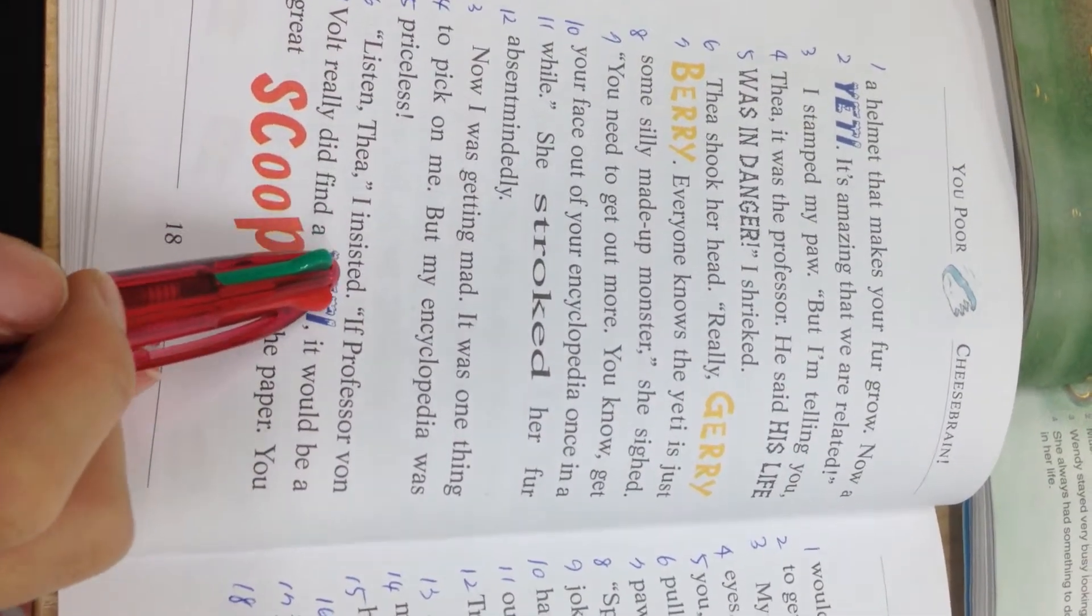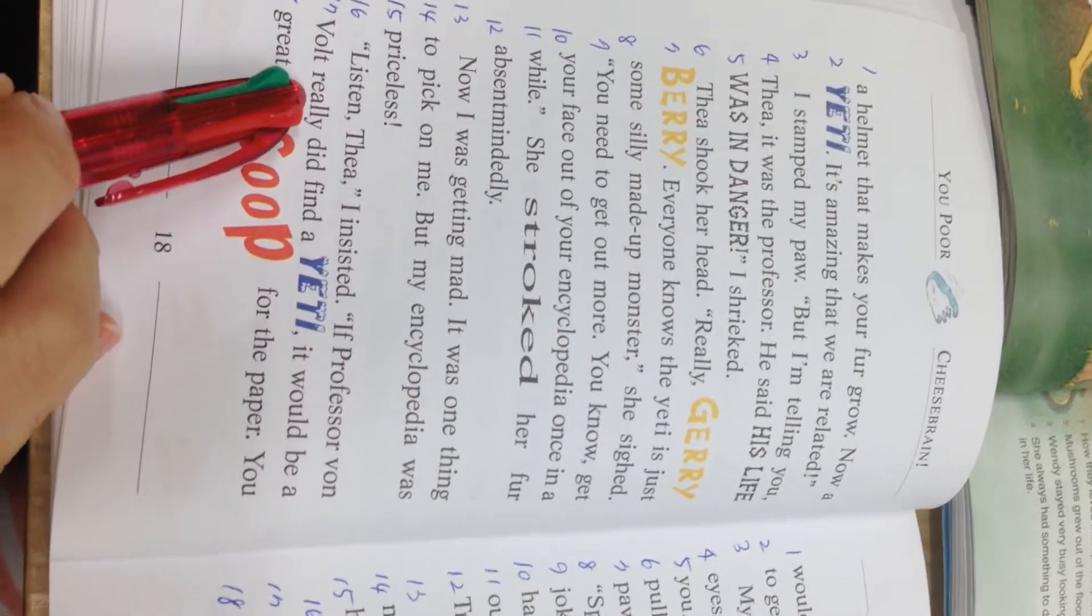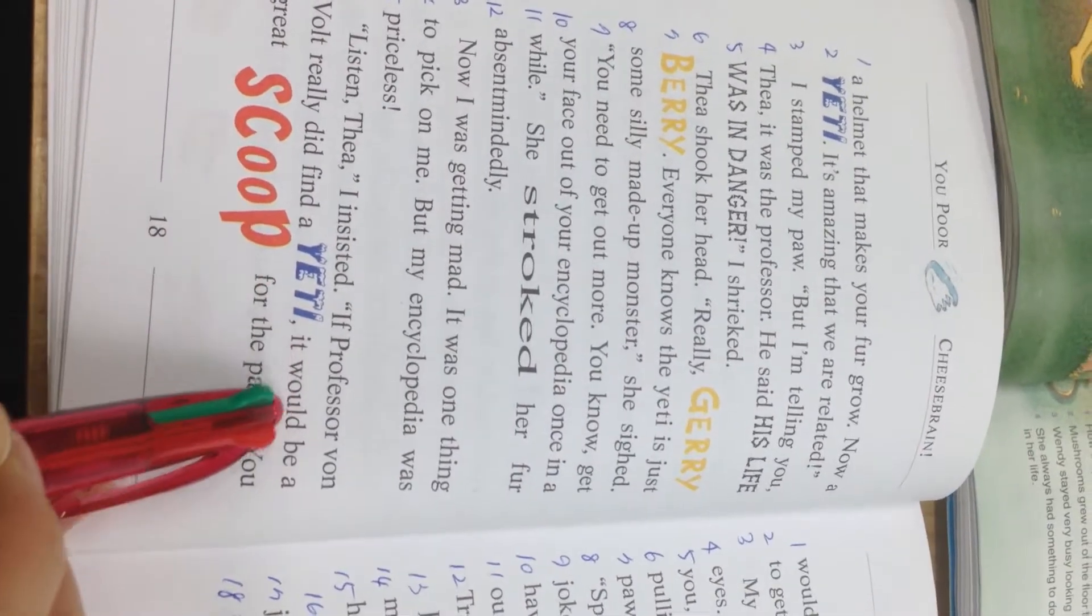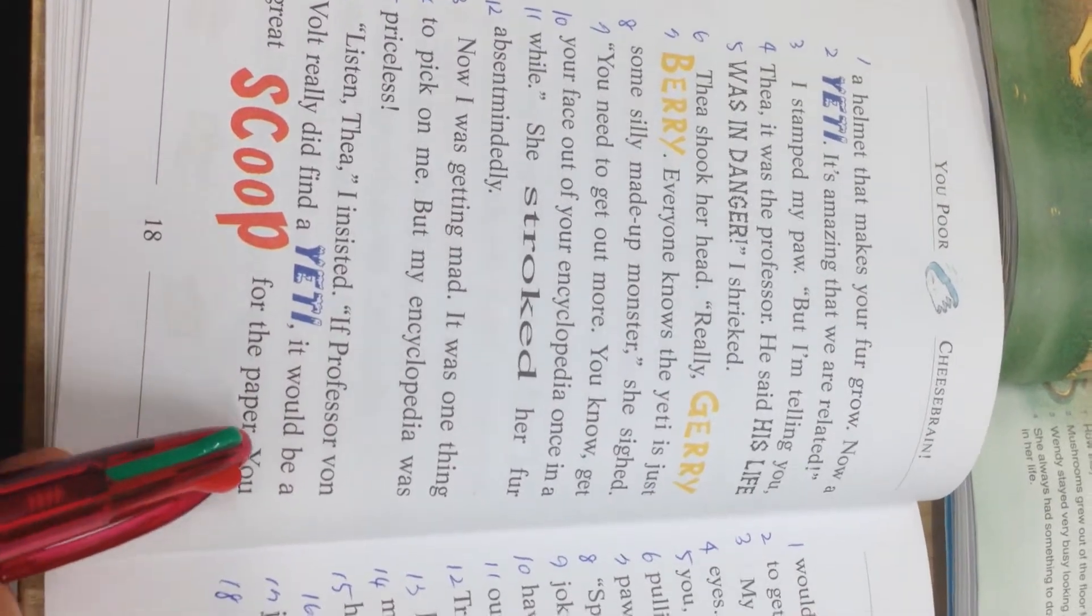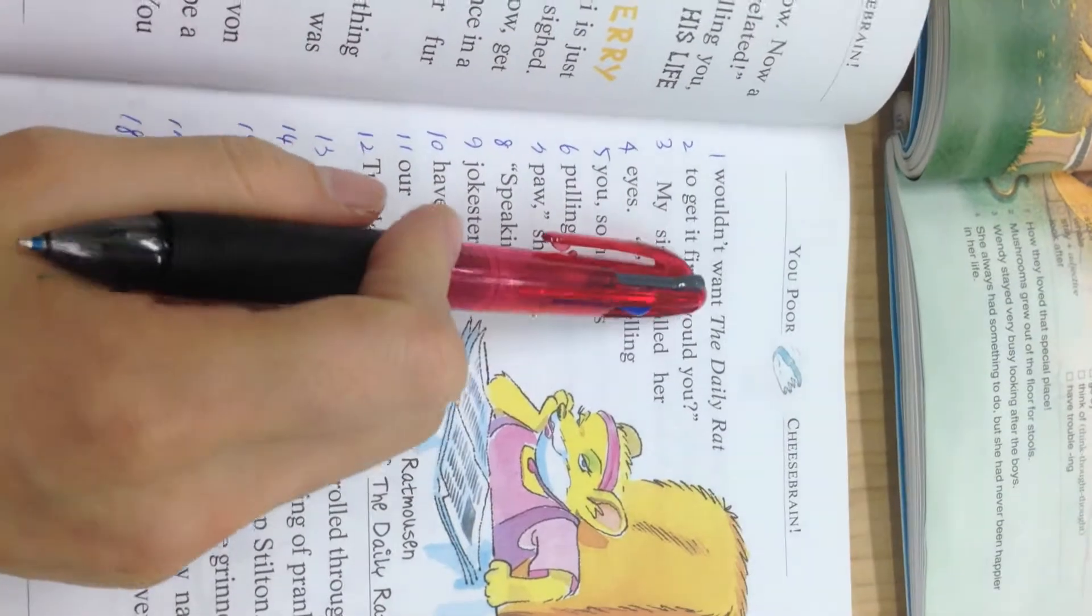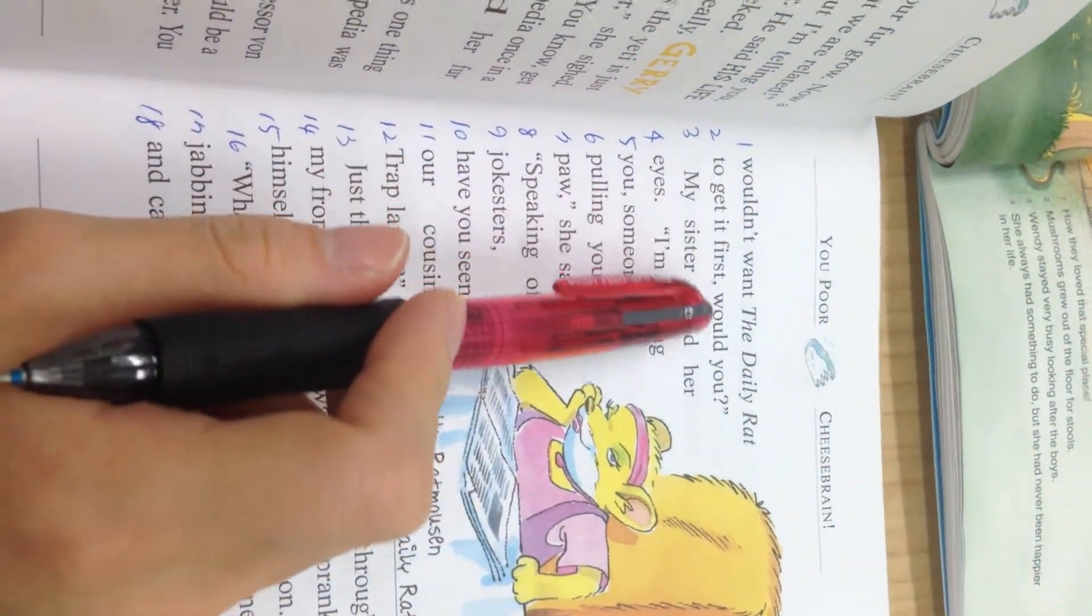Listen, Thea, I insisted. If Professor Von Vogt really did find a yeti, it would be a great scoop for the paper. You wouldn't want the daily rat to get it first, would you?